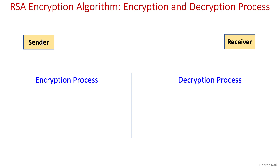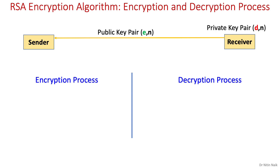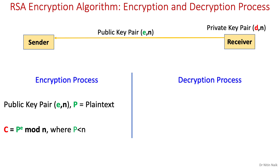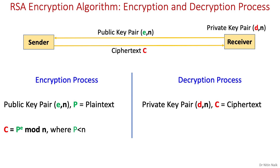Once the RSA keys are generated, encryption and decryption can be performed. The RSA keys are generated by the receiver. The public key is published and sent to the sender, while the private key is kept secret. The encryption operation is performed using the public key and plain text based on the given equation. The obtained ciphertext is sent to the receiver and decrypted using their private key based on the given equation.